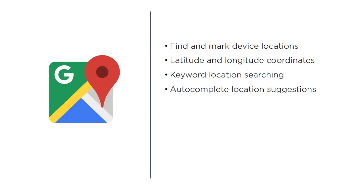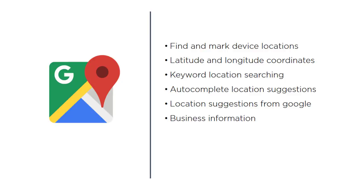You'll also learn how to get autocomplete suggestions from Google based on keyword searches, how to get location suggestions from the Google Places API and Place Picker interface, and last but not least, how to get information on businesses like website URLs or phone numbers.